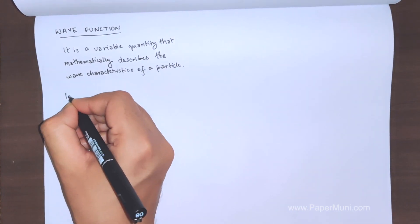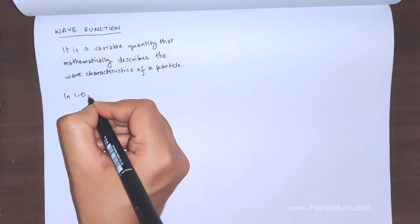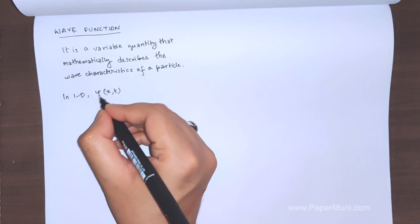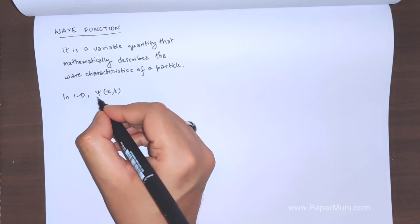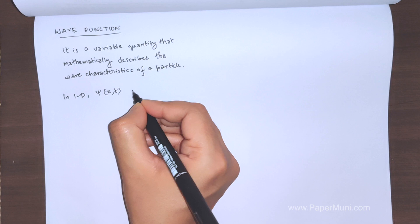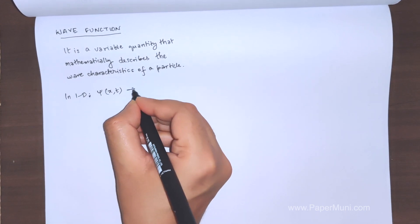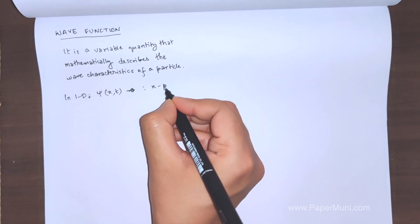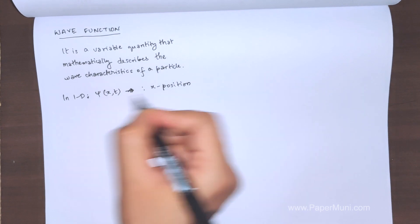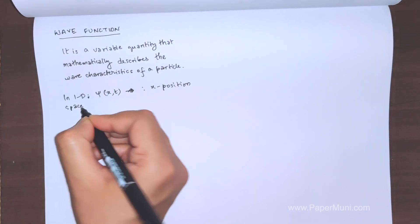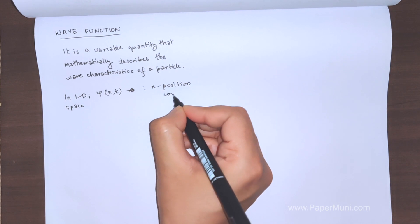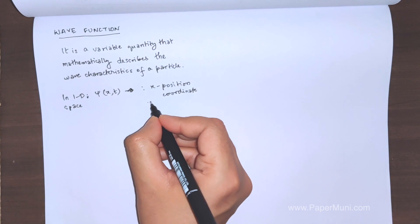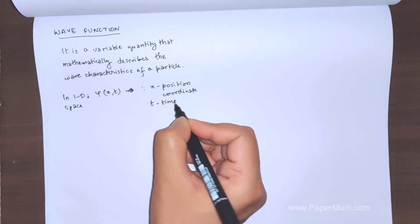Now in 1D, psi is written like this: psi of (x,t). We use mostly psi for the wave function in quantum mechanics. In this thing, what we have is x is the position coordinate, or the wave function in one dimension, and t is the time coordinate.